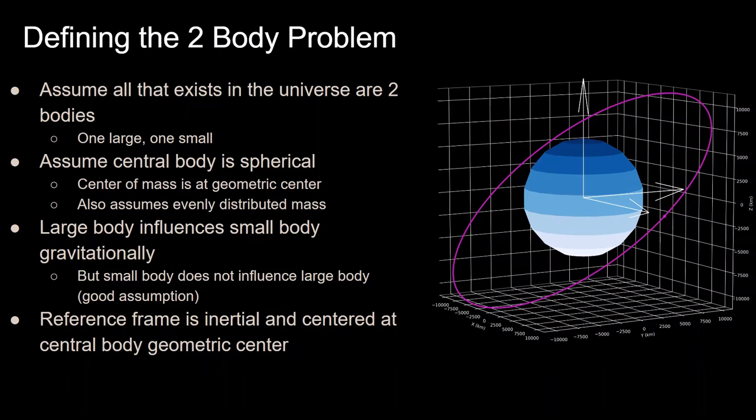And lastly, we'll be using an inertial reference frame centered at the geometric center of the large body, which is Earth. And the inertial frame is shown in the white arrows on the plot here, centered at the center of the Earth. And even though these are a lot of assumptions and this can seem way too restrictive, you can still do a lot of very useful analysis with the results coming out of these assumptions.